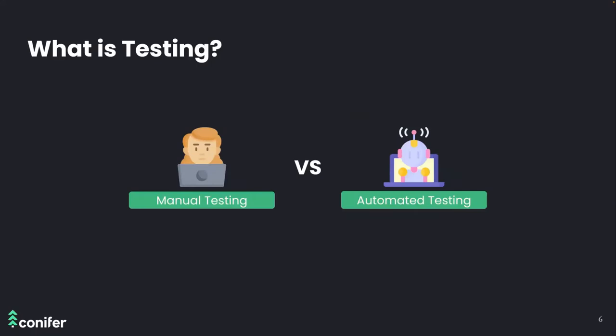Testing can be done manually or with automated tools. As applications grow in size and complexity, manual testing is not sustainable — it doesn't scale well and it's a slow process of diagnosing a problem and creating a fix. How do we know that a fix doesn't introduce new problems? We need to test again. Here's where automated testing helps: instead of manually going through each test case, developers can write scripts that execute the same test steps automatically.